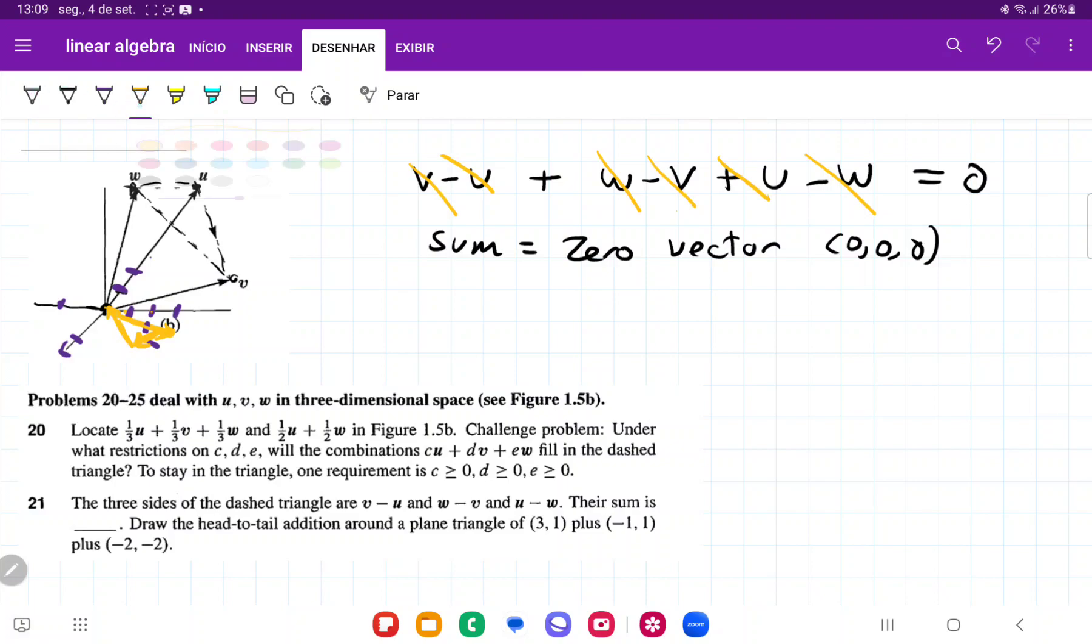And maybe let me just redraw this in a neater way. So the first vector goes out here. The second vector goes to the side here. And then the third vector goes back up to the zero vector. So what we can say is that the plain addition of these three vectors, they lead back to the zero vector. And that is it for number 21.